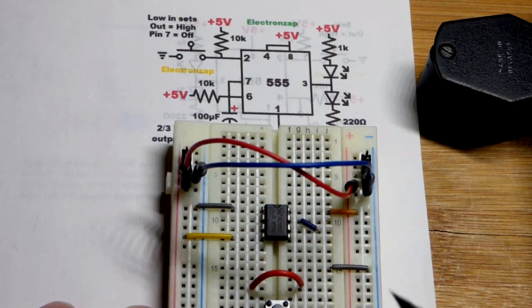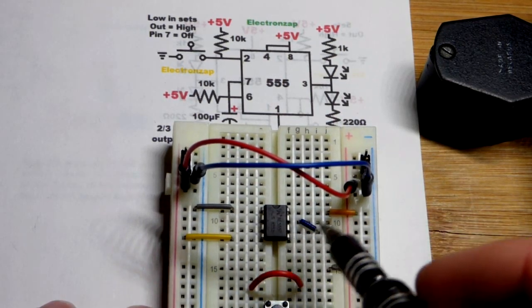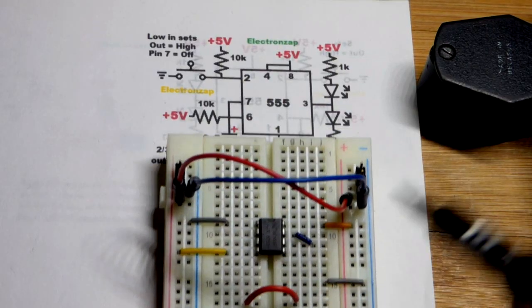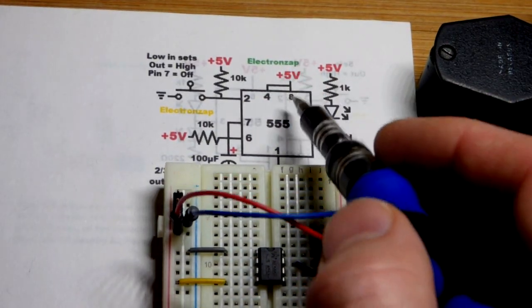This is called a dual inline package. They straddle this gap in between the two connections to the left and to the right. So now let's talk about the jumpers I already have on the board. I think this is a good way to go, start with the jumpers even when you're building the circuit.